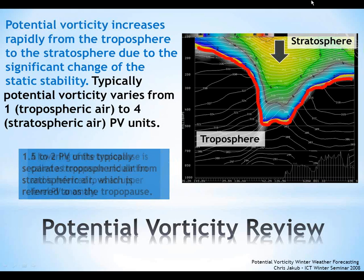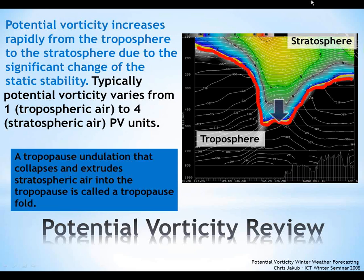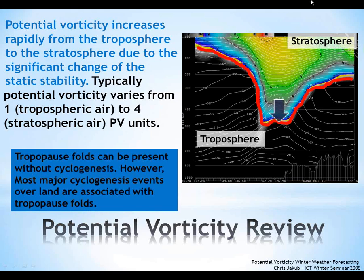The lowering of the tropopause is called a tropopause undulation, and in this case it's referred to as an upper-level PV anomaly. A tropopause undulation that collapses and extrudes stratospheric air into the troposphere is called a tropopause fold. Tropopause folds can be present without cyclogenesis; however, most major cyclogenesis events over land are associated with a tropopause fold.